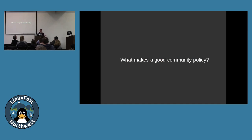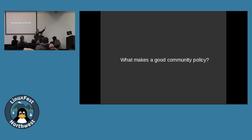What makes a good community policy? There are all sorts of different things that people use to define what they think a community policy should look like. One of the things we say is it's important to give specific examples of inappropriate behavior. Because when you give a specific example, you then have something someone can point to and say, 'It says in the code of conduct that somebody is not allowed to call somebody else a jerk face, and somebody called me a jerk face.' So now you have something to point at and feel a little bit more comfortable.